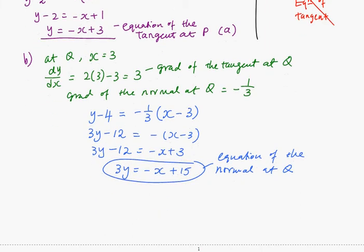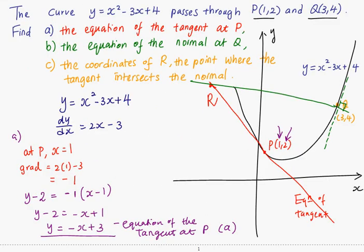Now for part c, which is to find the coordinates of R, which is the intersection of the normal and the tangent. So to find the intersection point, we solve the two equations simultaneously.